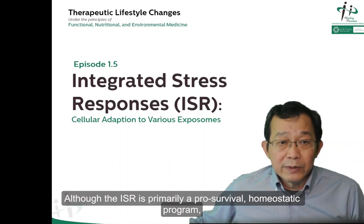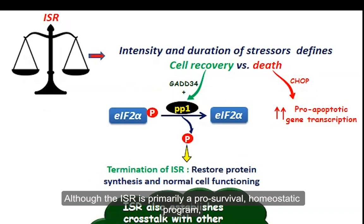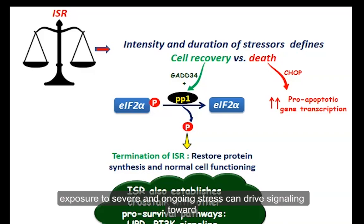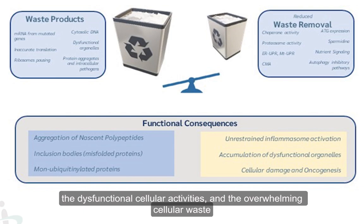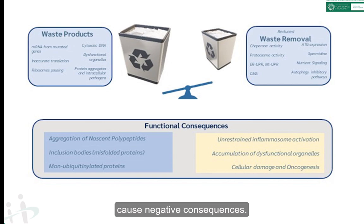Although the ISR is primarily a pro-survival homeostatic program, exposure to severe and ongoing stress can drive signaling toward cellular damage or even cellular death. Once the accumulated challenges surpass the host tolerance, the dysfunctional cellular activities and the overwhelming of cellular waste cause negative consequences.